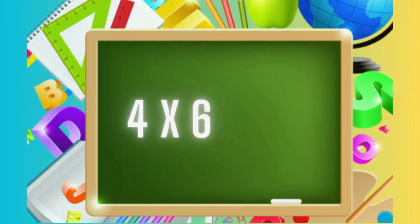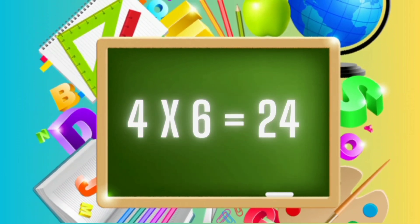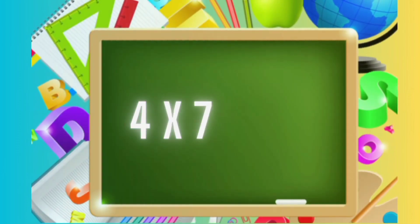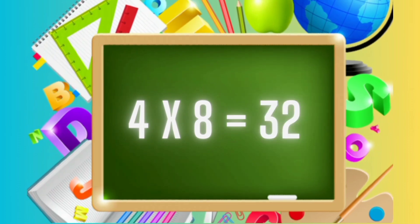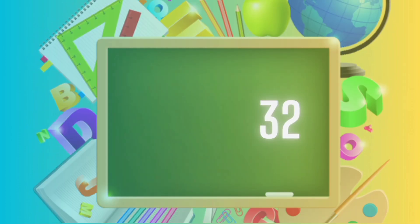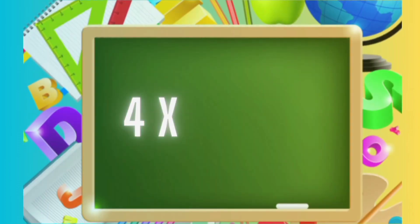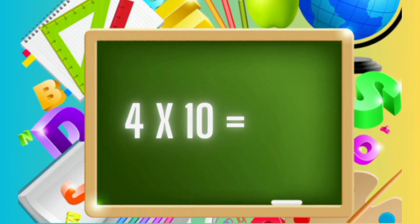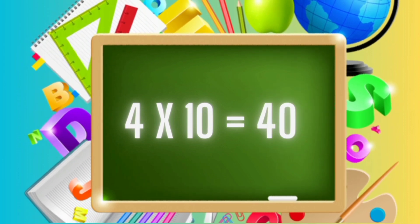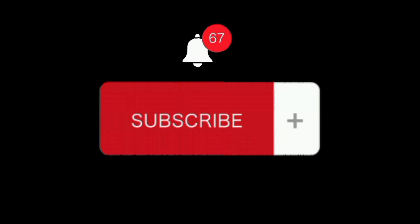Four sixes are twenty-four. Four sevens are twenty-eight. Four eights are thirty-two. Four nines are thirty-six. Four tens are forty. Please like and subscribe.